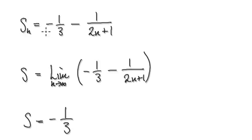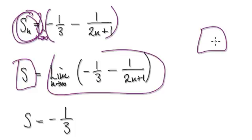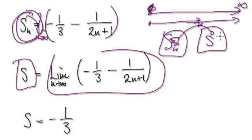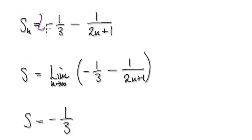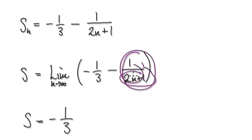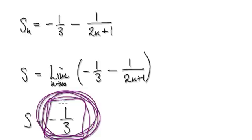Now take the limit as n tends to infinity. When you do that, Sn becomes S, because S on its own represents summing from the first term all the way to infinity. As n tends to infinity, the term involving n goes to zero, leaving you with negative a third. So if you sum everything from the first term all the way to infinity, the sum converges to negative a third.